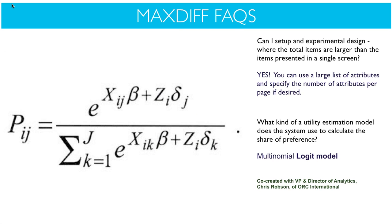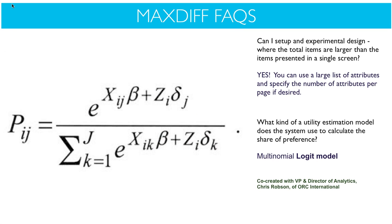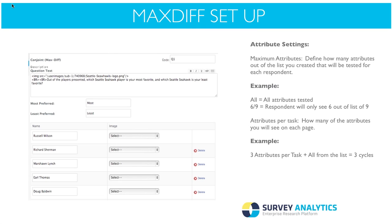The second common question: what kind of utility estimation model does the system use to calculate the share of preference? We use the multinomial logit model, co-created with the director of analytics at ORC International, Chris Robson. The calculations are verified to be very good to work with, and we can stand behind our system and the output we provide to clients.